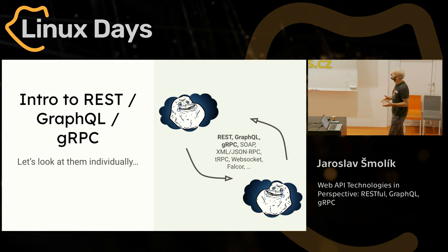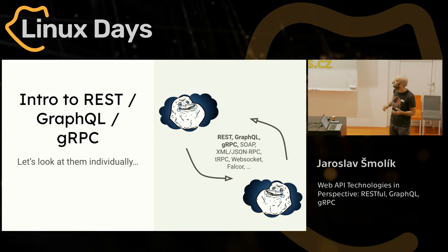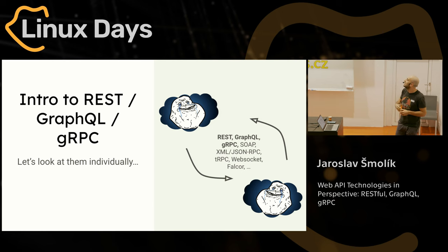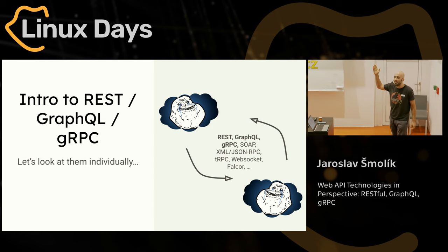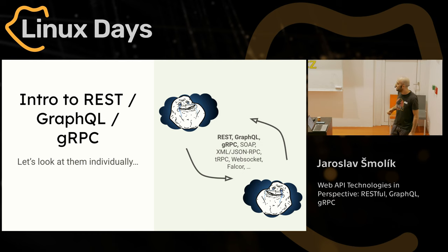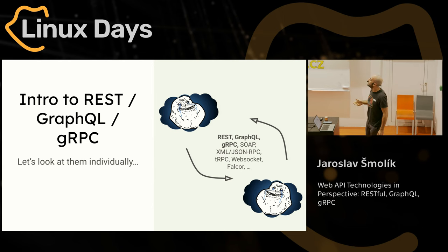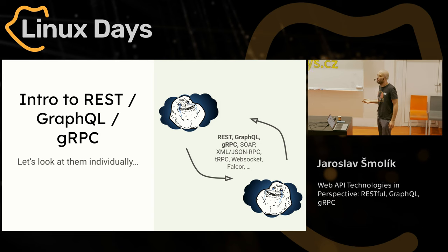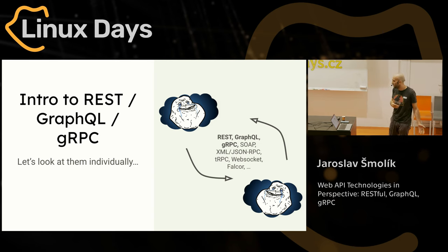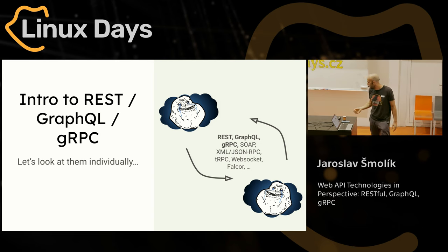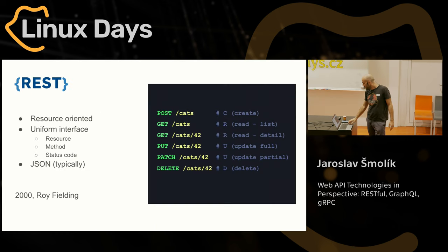These three all solve the problem when you have two nodes in the network that want to communicate. One of them is typically a server providing some API, and the other is a client calling the API. These three are not the only ones — there are some alternatives — but I believe these three are relevant for you, whether you're building an MVP, a prototype, or even an enterprise application.